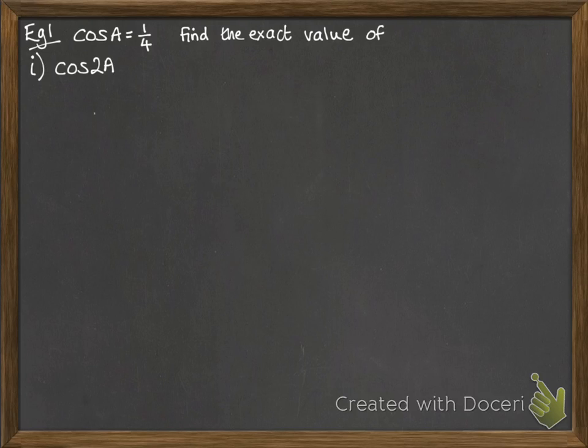There are three to choose from. Now since we're told about what cos(a) is, and we don't have any information on sine, we want the one that only uses cos. So that's this one.